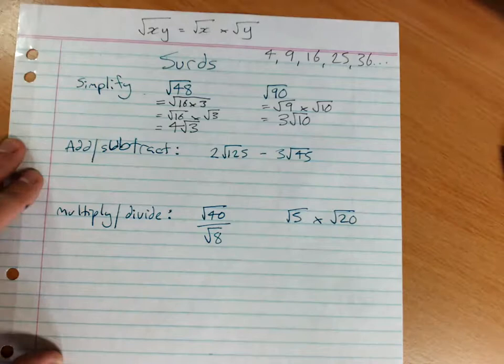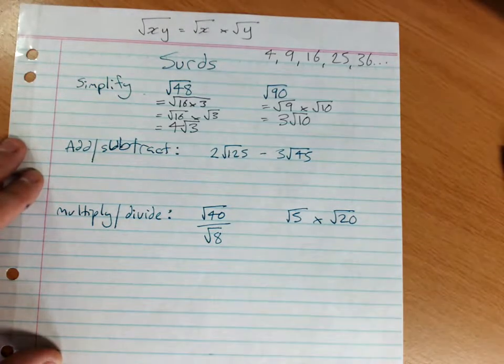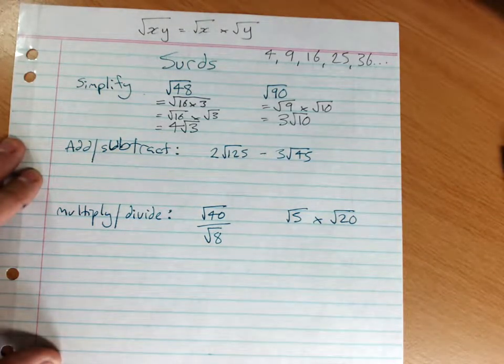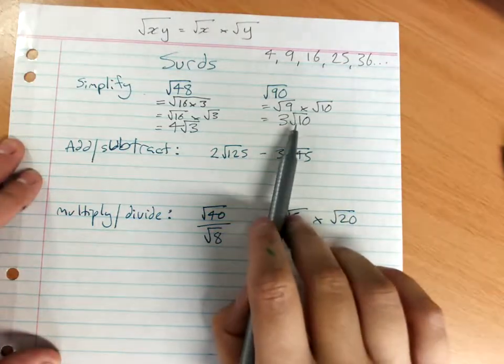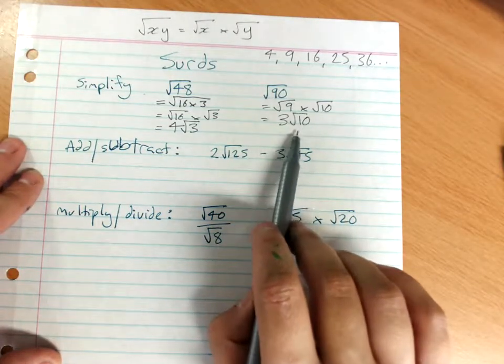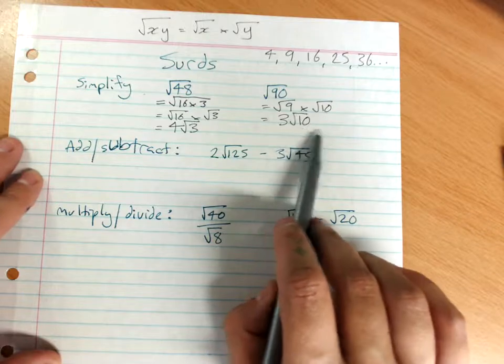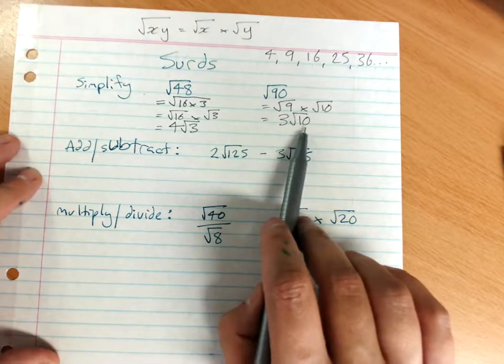You can check that on your green calculators, which is a good idea. You do have to show me working. It's also a good idea to double-check what's left under the radical as your surd, to make sure you can't get another square factor of that. Sometimes we haven't simplified fully.